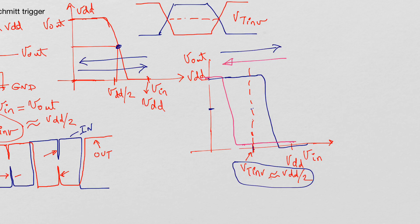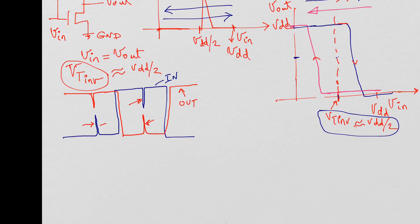When V-in is going high, we want it to switch after it has passed the threshold voltage of the inverter — at a higher voltage. When V-in is going low, V-in has to go much lower than the threshold of the inverter before the output goes high. If you have a circuit with this kind of behavior, looking at the noisy waveform, your output will reject the glitches. It remains low and only transitions appropriately — basically rejecting glitches on the input.